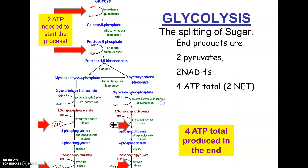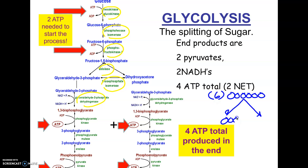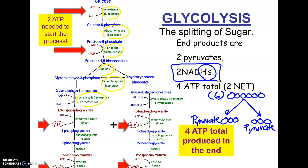Glycolysis means to split sugar — glyco for sugar, lysis to break. It's a really complicated process with many steps, each requiring an enzyme, but you don't have to know all of that. All you really need to know is that after all these steps, you took one glucose — which is six carbons — and split it into two molecules of pyruvate, each three carbons. So glucose basically just got cracked in half. You also lose a couple of hydrogens, which end up on the coenzyme NADH.